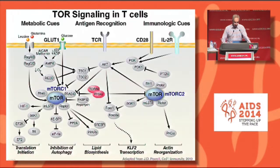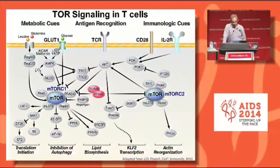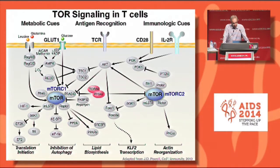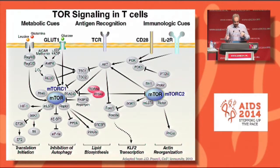The second aspect of TOR signaling I want to highlight involves the full TOR signaling network in T cells, with metabolic cues, antigen recognition, and immunologic cues at the top, and the two major TOR kinases — mTORc1 and mTORc2 — and all their targets. There are a number of inhibitors developed, including rapamycin used in the clinic, which appears to be an mTORc1-selective inhibitor. However, there are other inhibitors — torin and PP242 — that inhibit both TOR proteins.